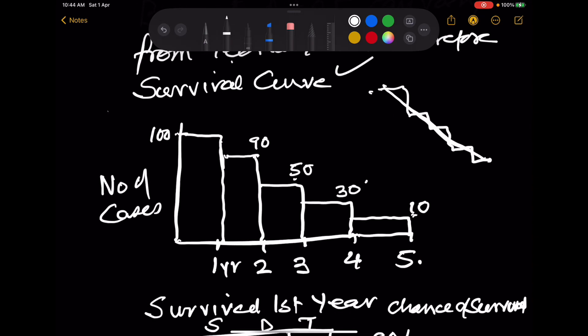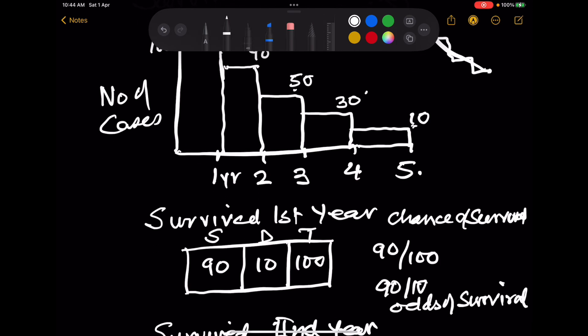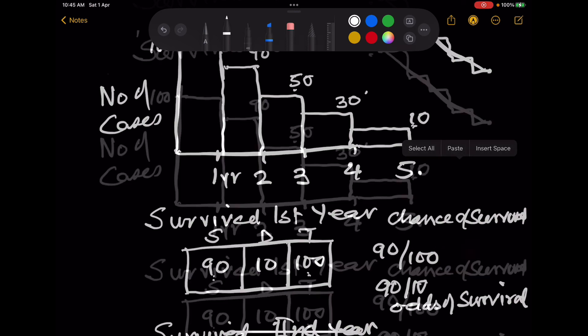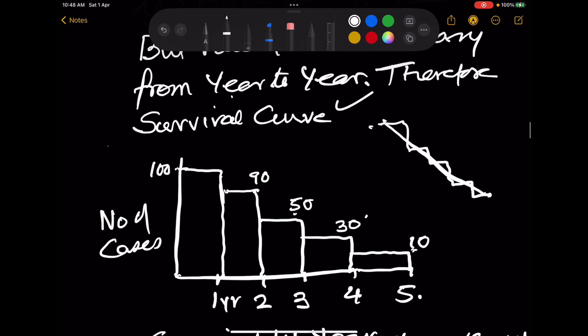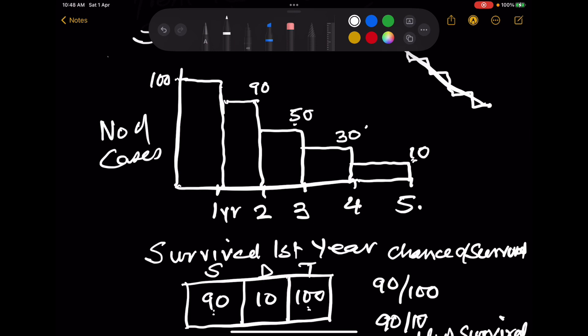So if we try to find out at each year what happened: in the first year 90 survived the first year. So 90 out of 100 survived. 100 were at the risk of dying. 90 survived.